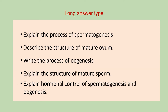The third category of questions is long answer questions. Question one: explain the process of spermatogenesis. Next: describe the structure of mature ovum — while answering, you have to draw the diagram of the ovum and also describe each part of it. Next: write the process of oogenesis. Next: explain the structure of mature sperm — again, you have to draw the diagram of the mature sperm and describe each part. The last question: explain hormonal control of spermatogenesis and oogenesis.